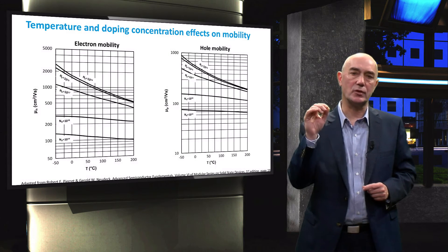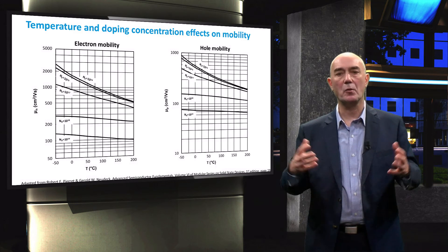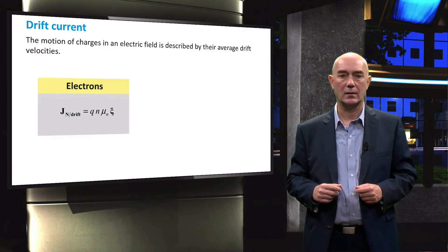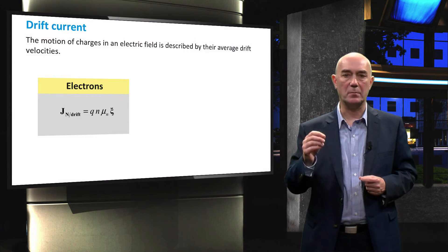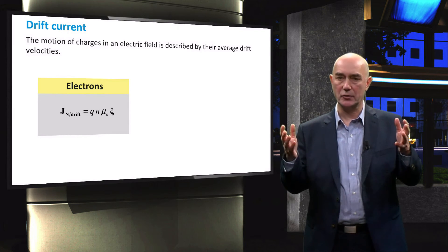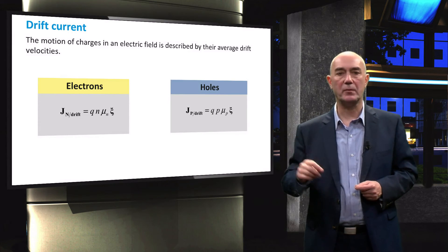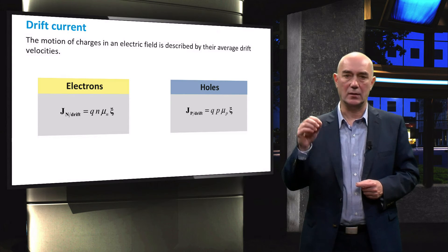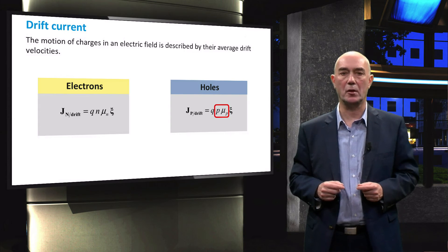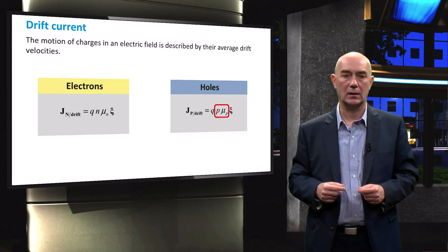Now that we have understood what mobility is and how it is influenced, let's go back to our drift equation. We see that the drift current of electrons depends on the mobility of electrons, the electric field, and the concentration of charge carriers. The same equation holds for holes. The notable difference is that the hole current depends on the concentration of holes and the hole mobility.